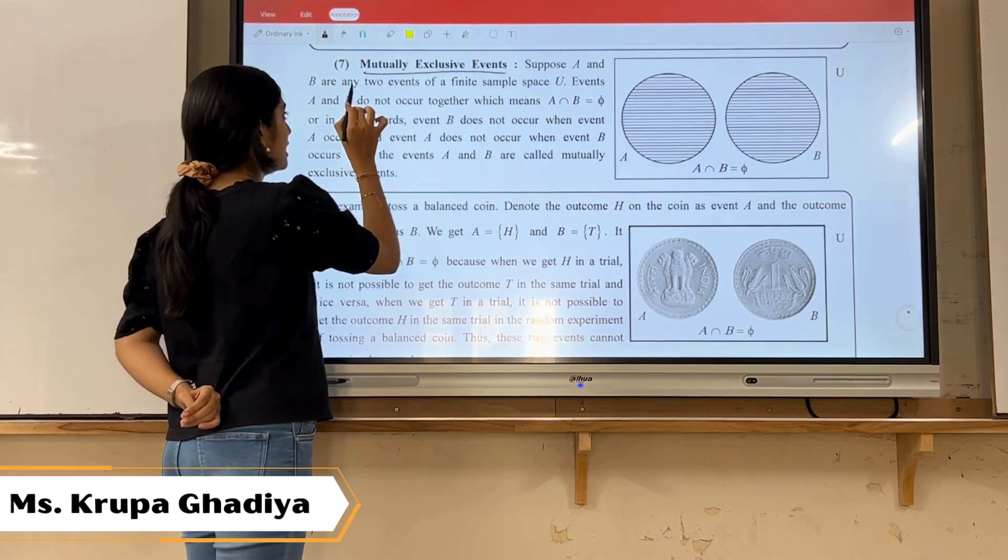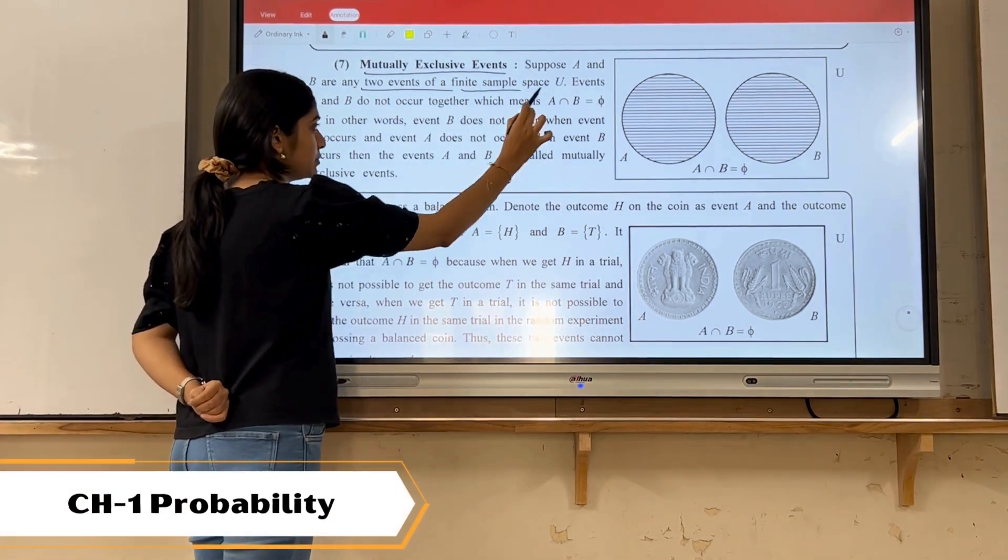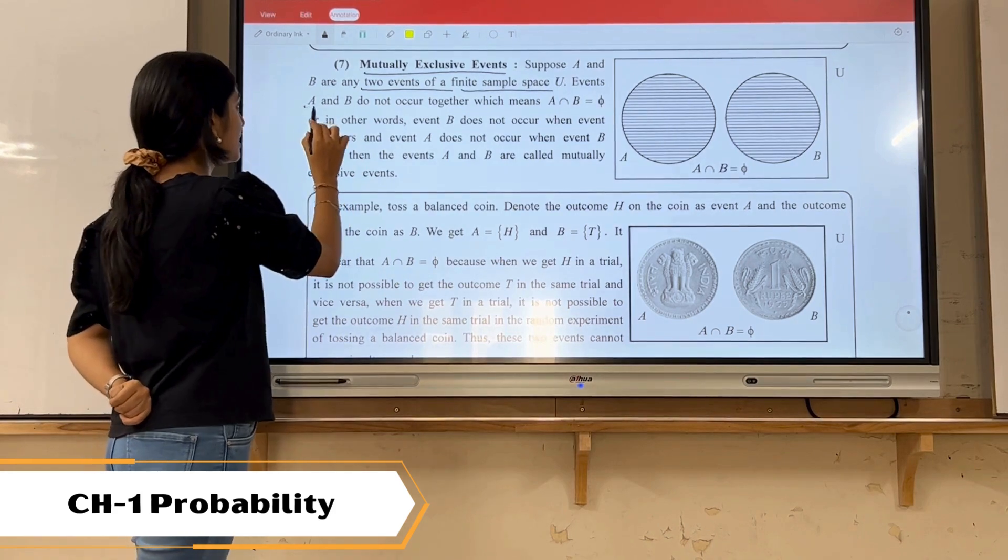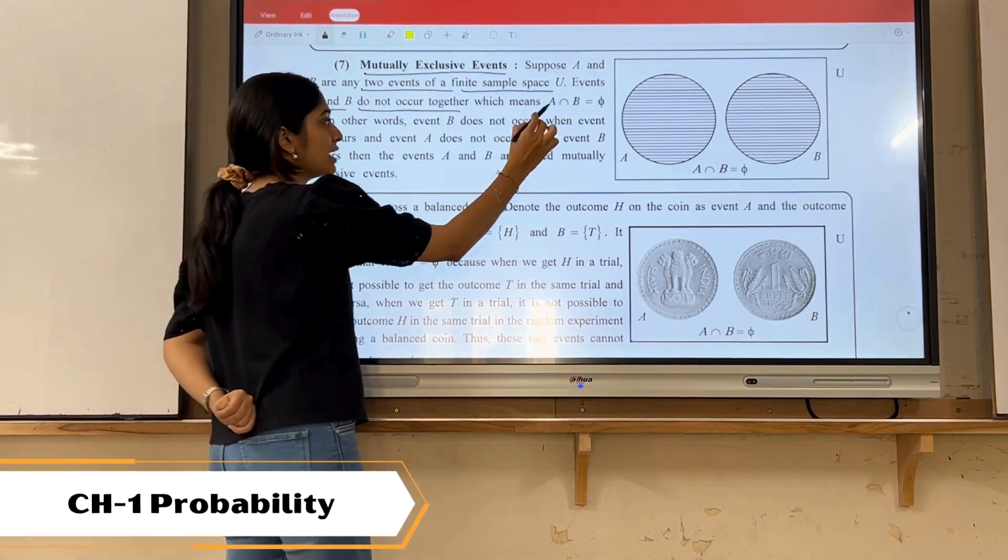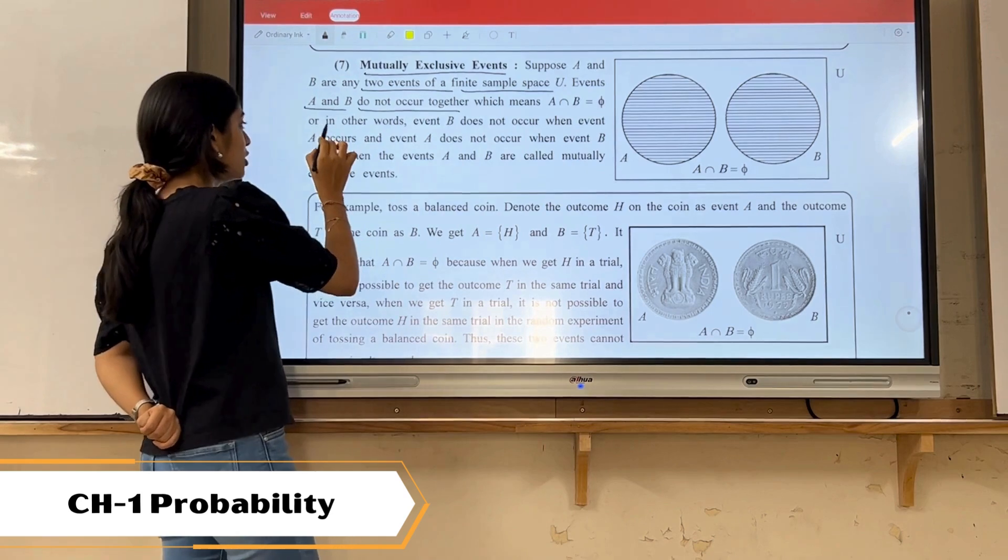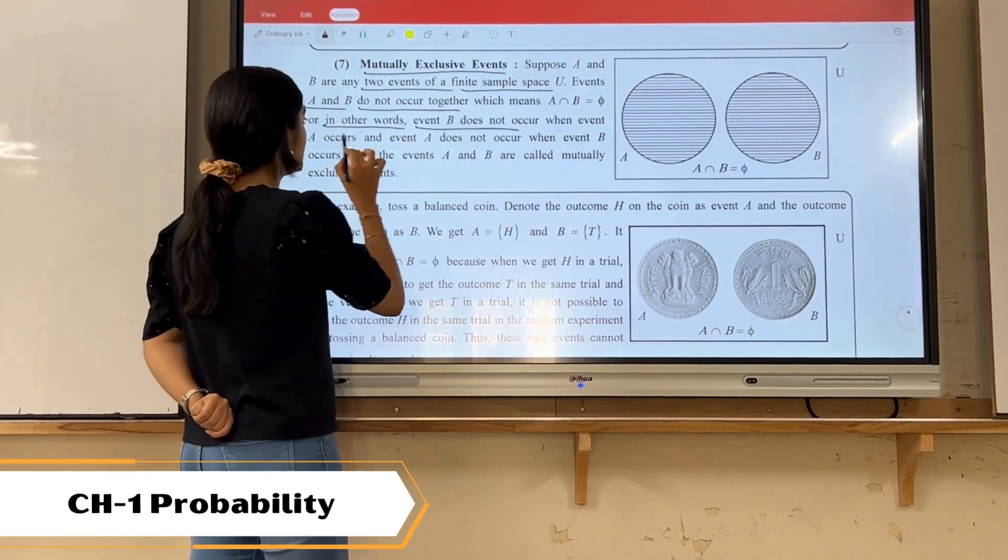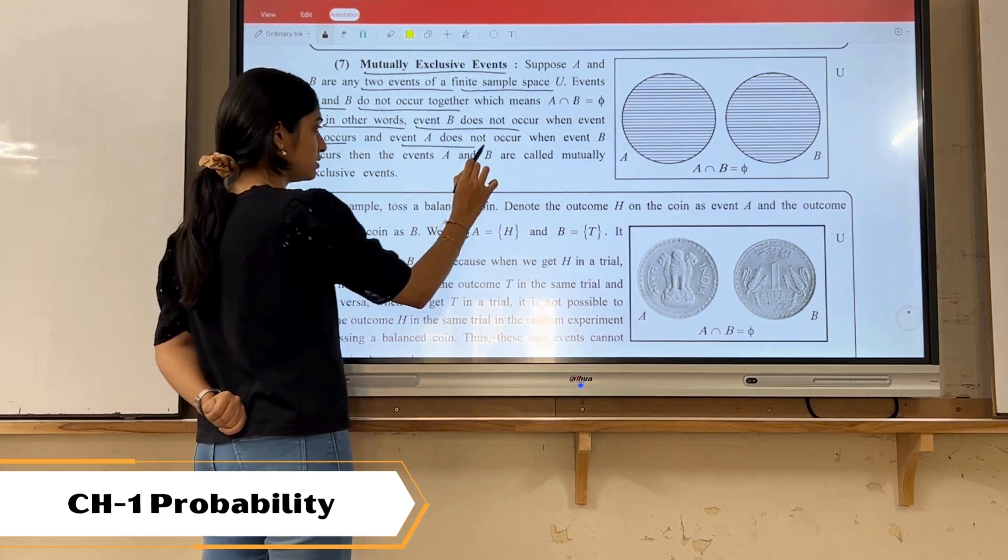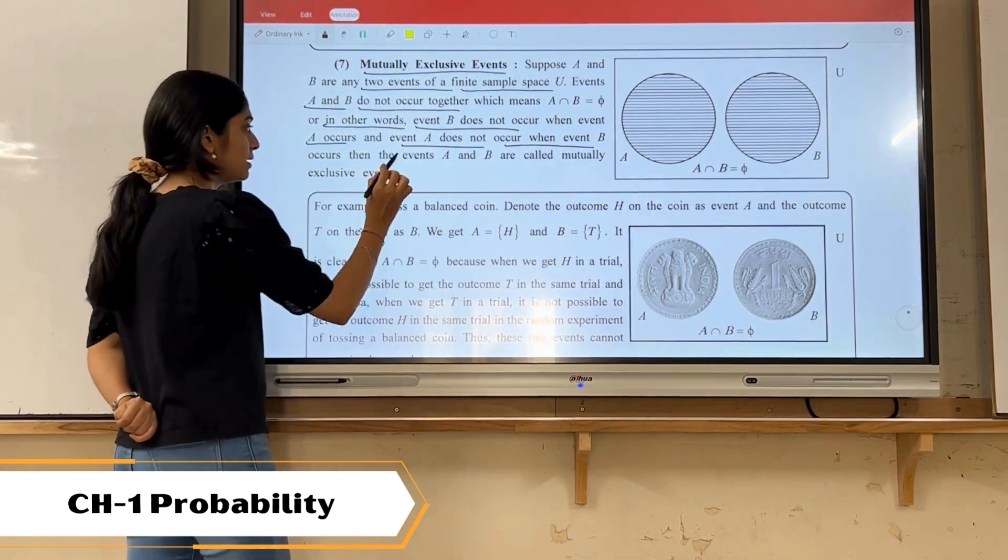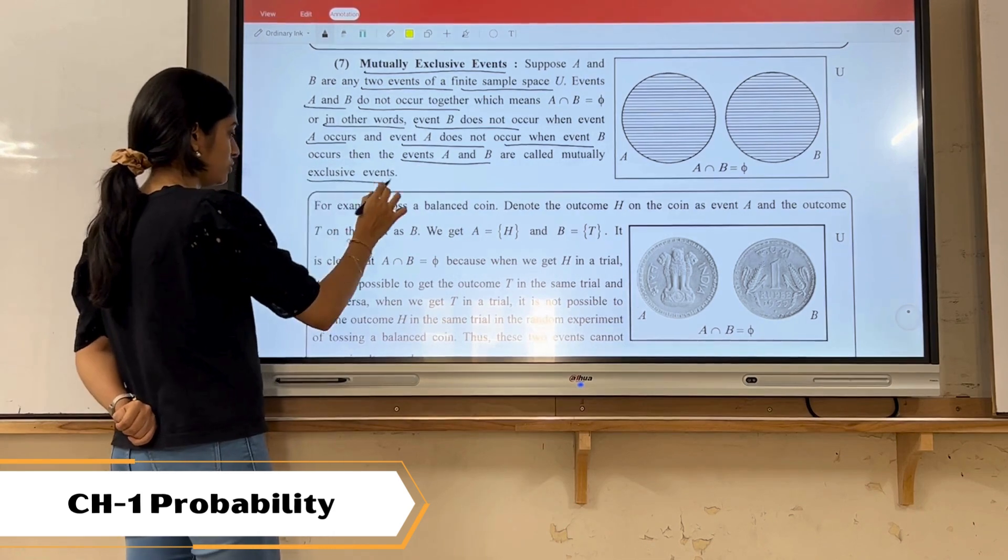Suppose A and B are any two events of finite sample space U. Then event A and B do not occur together, which means when A intersection B is null set. In other words, we can say that event B doesn't occur when event A occurs and event A doesn't occur when event B occurs. Then the event A and B are called mutually exclusive event.